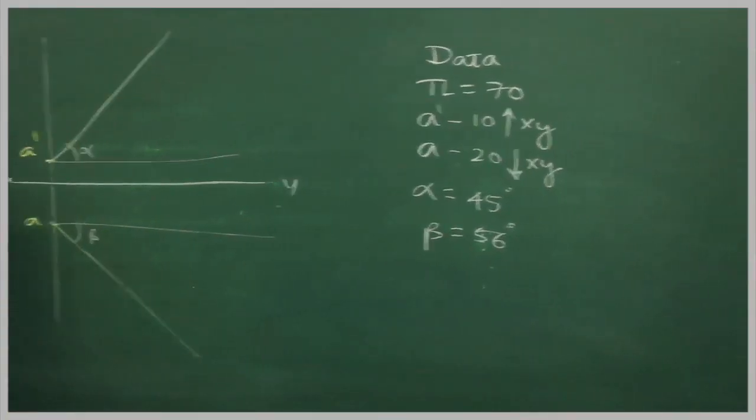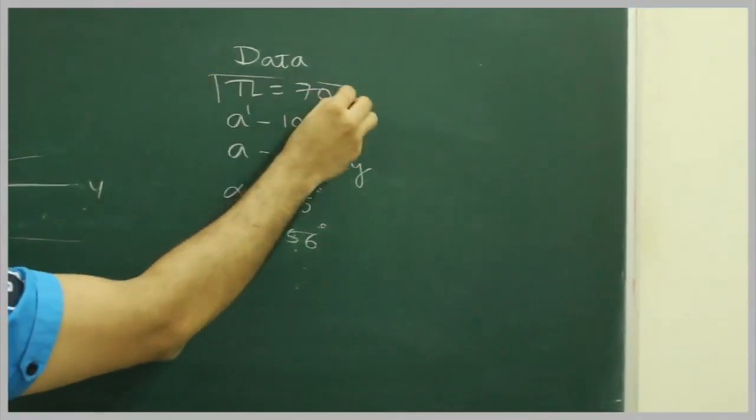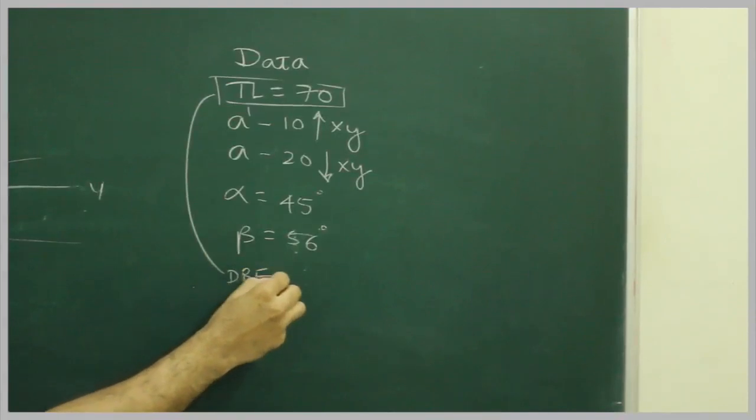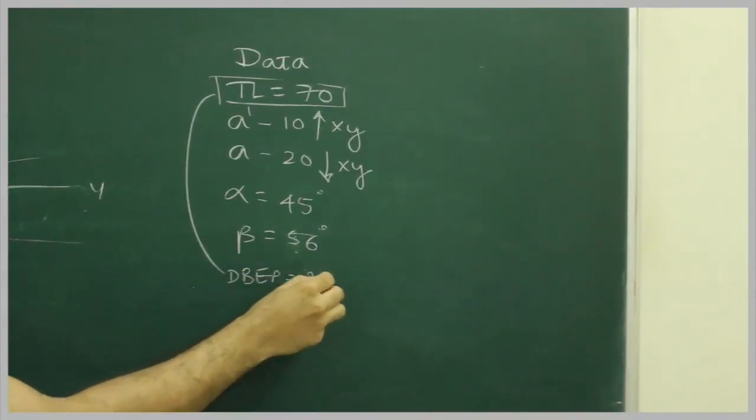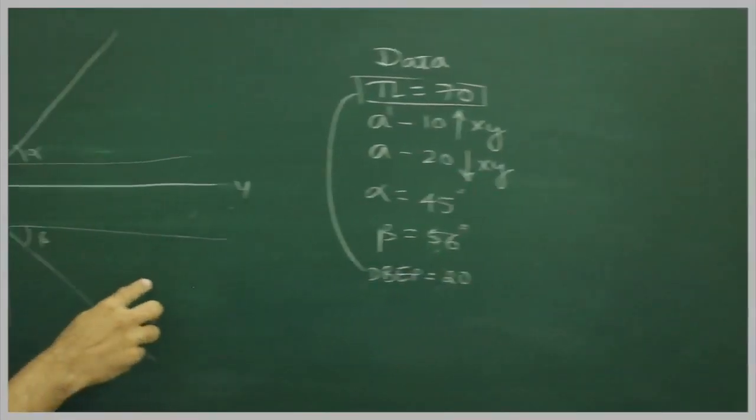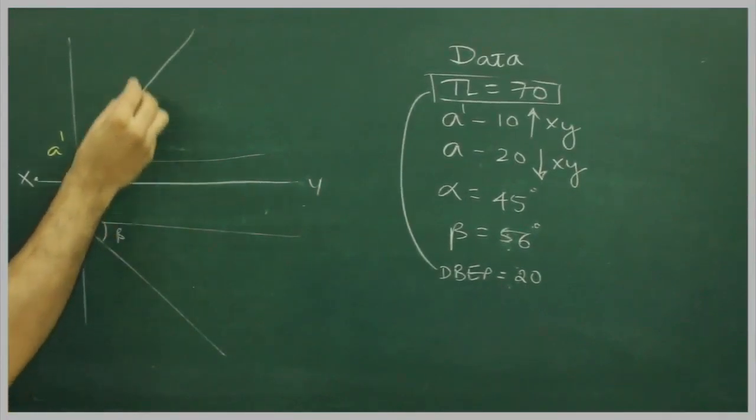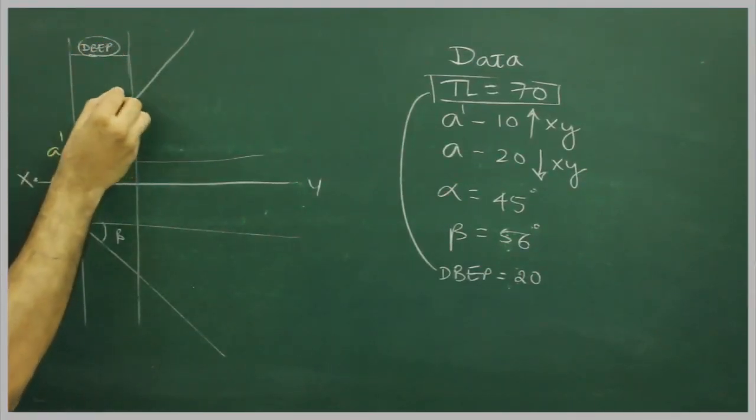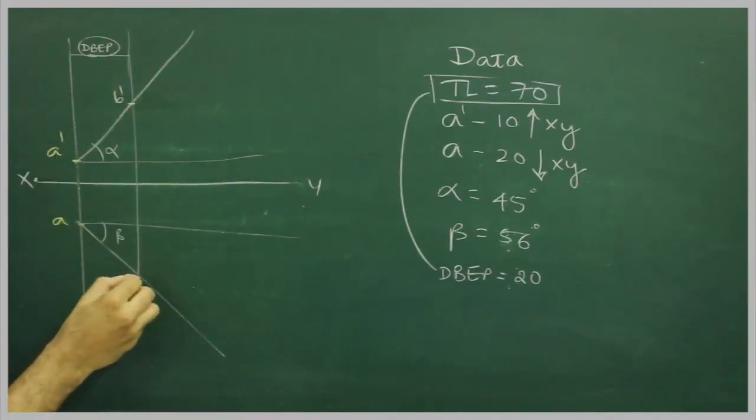So, what we will do, instead of true length, we will assume DREF 20, that is, let's say 20. So, from here we will take 20, and we will draw DREF 20. This is DREF 20, and the assumed one, wherever it will cut, that will be d dash and K.